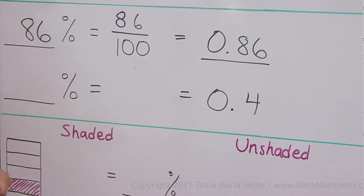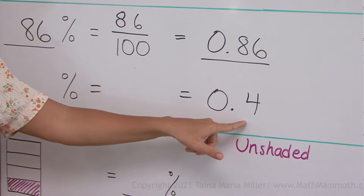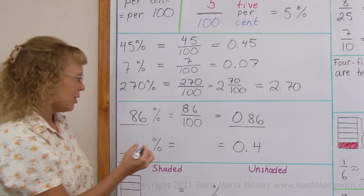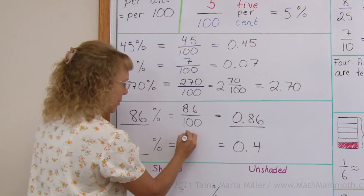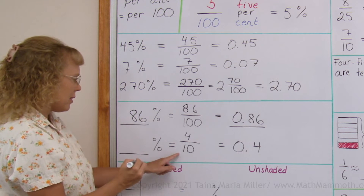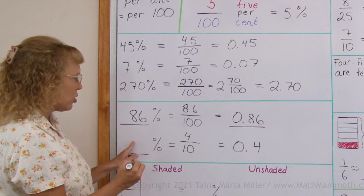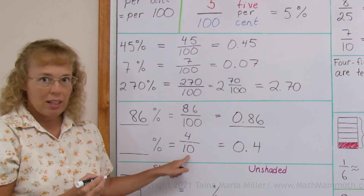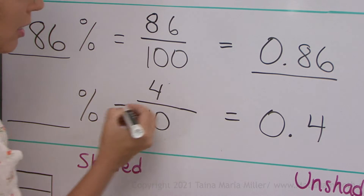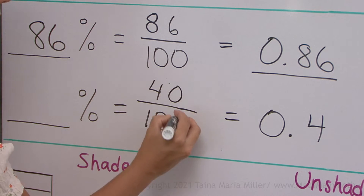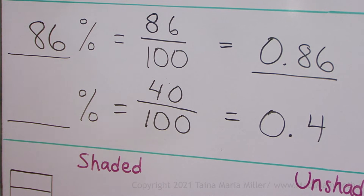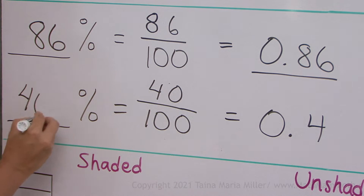How about this one? 0.4 — 4 tenths. As a fraction it is 4 tenths. But as a percentage, you would want 100 in the denominator. And I can do that if I write it as 40 hundredths — an equivalent fraction — and then I get 40%.